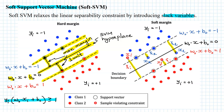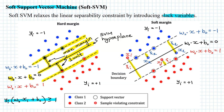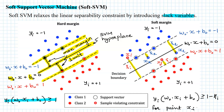Rather than requiring yᵢ(w₀·xᵢ + b₀) ≥ 1, the relaxed constraint becomes yᵢ(w₀·xᵢ + b₀) ≥ 1 − ξᵢ for each point xᵢ. This modification is applied for all data points in both the blue and red classes.